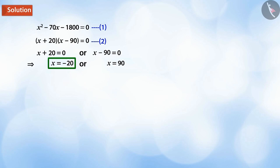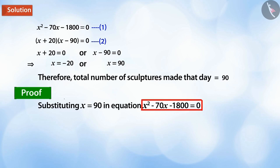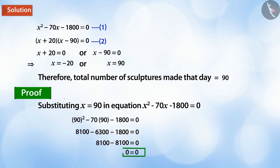Therefore, x = -20 and x = 90 are the solutions to the given quadratic equation. Since we need to find the number of sculptures made and it cannot be negative, hence there were 90 sculptures made that day. On substituting the value of x as 90 in equation 1, we get it equal to zero which proves that our answer x = 90 is absolutely right.